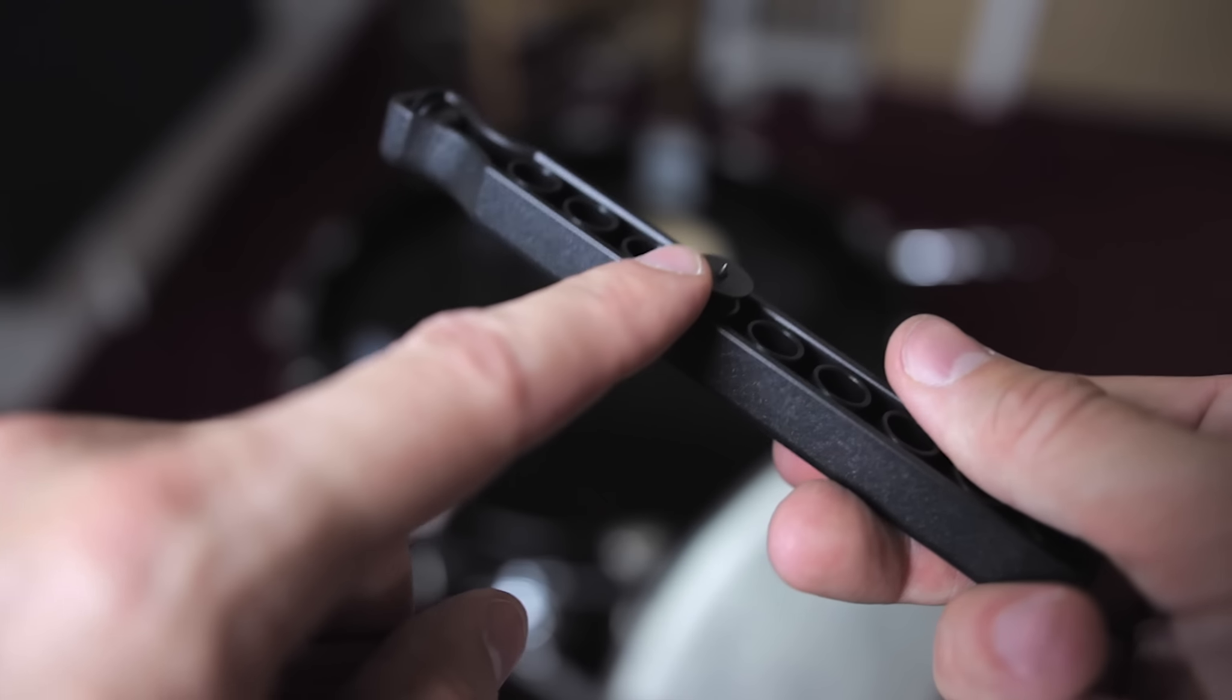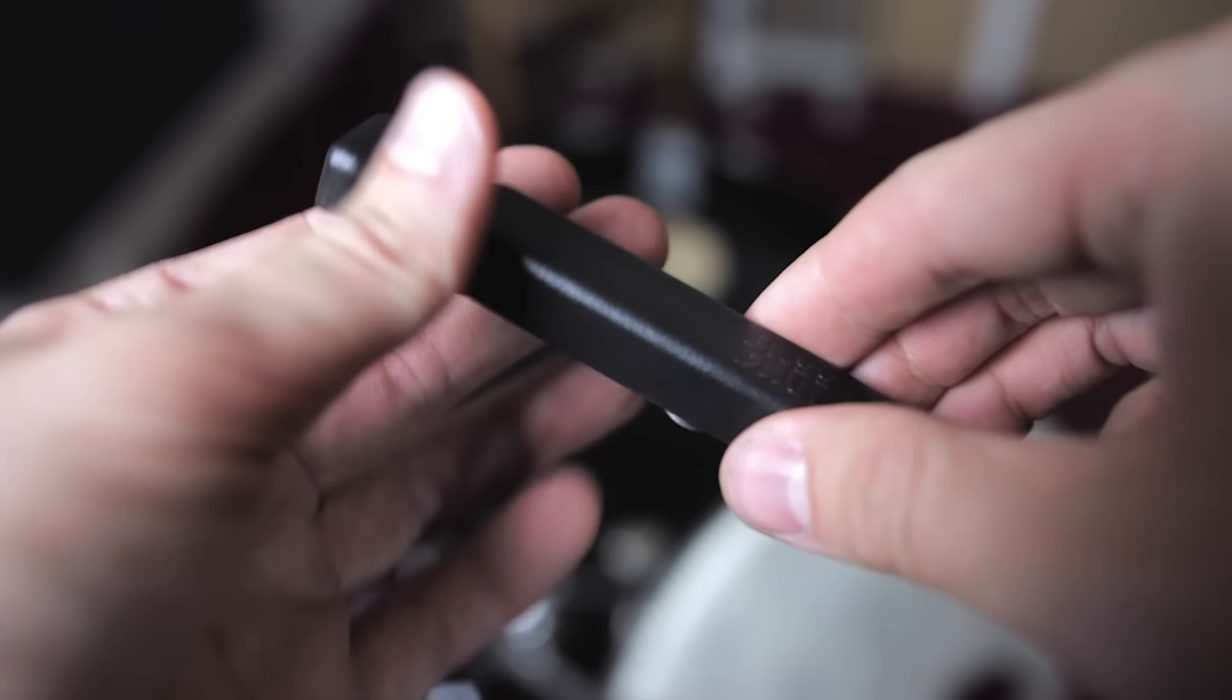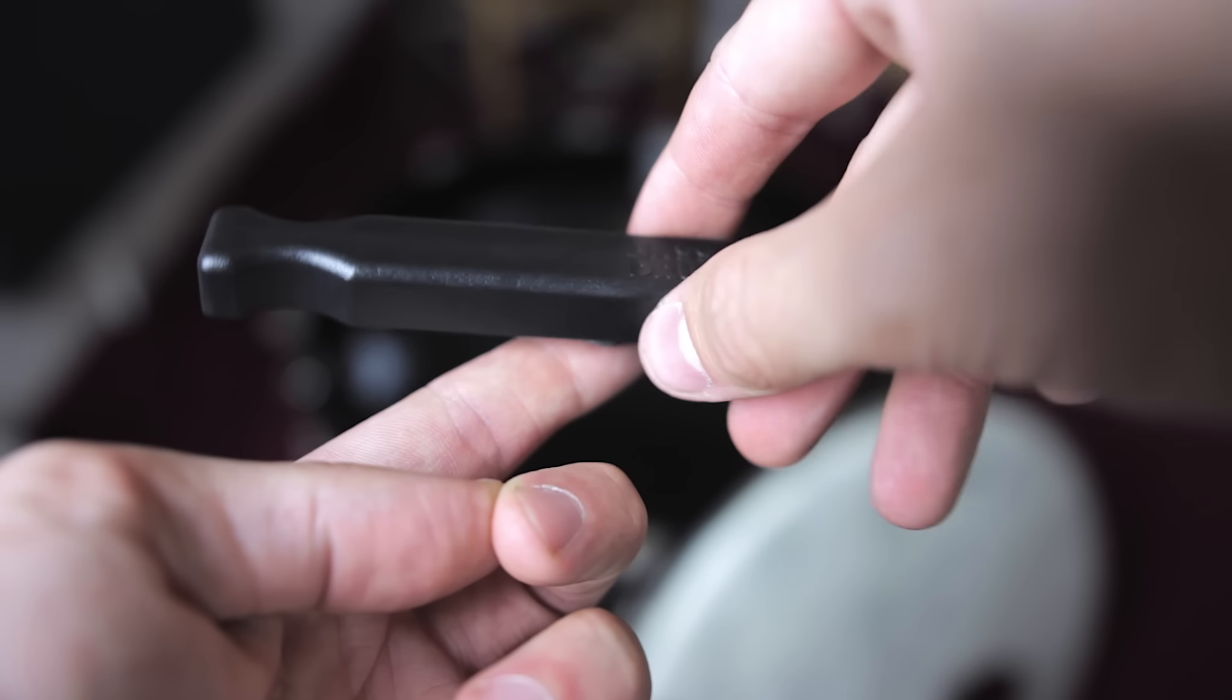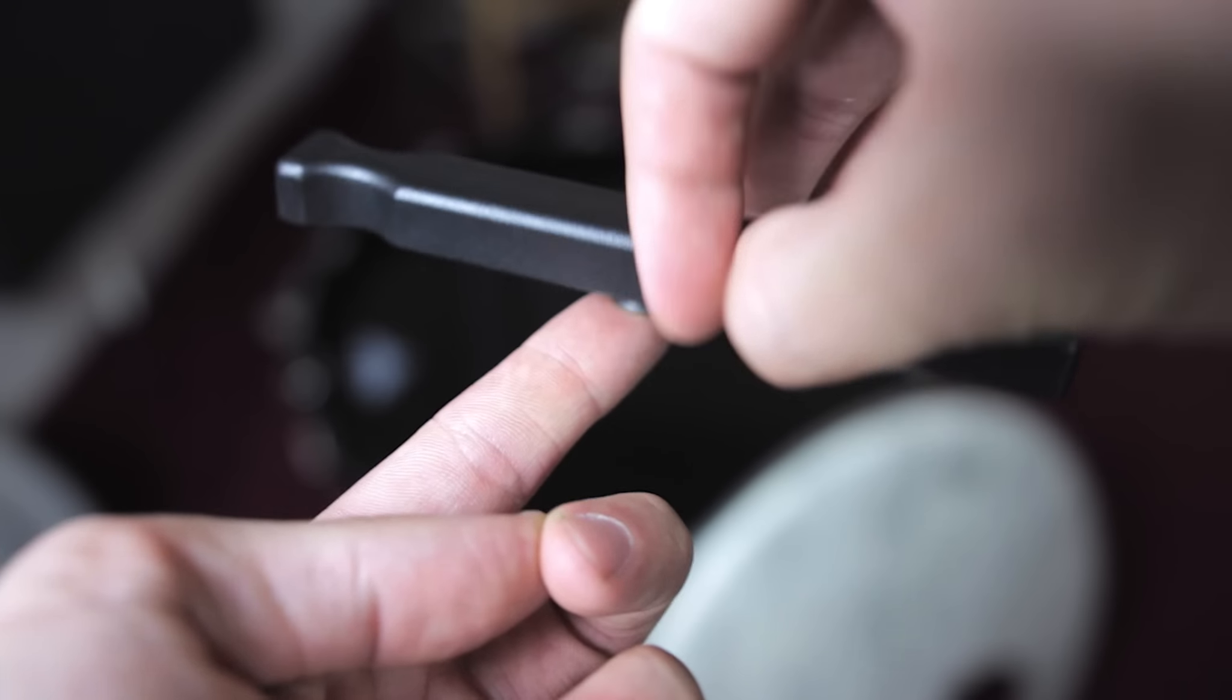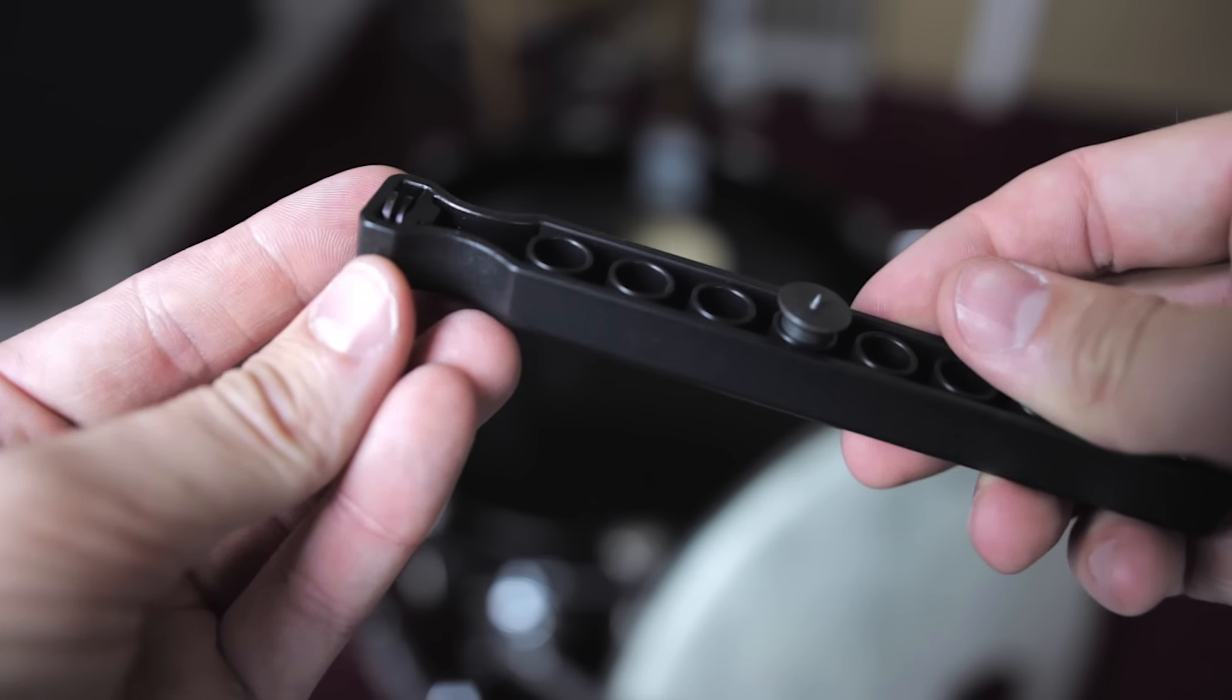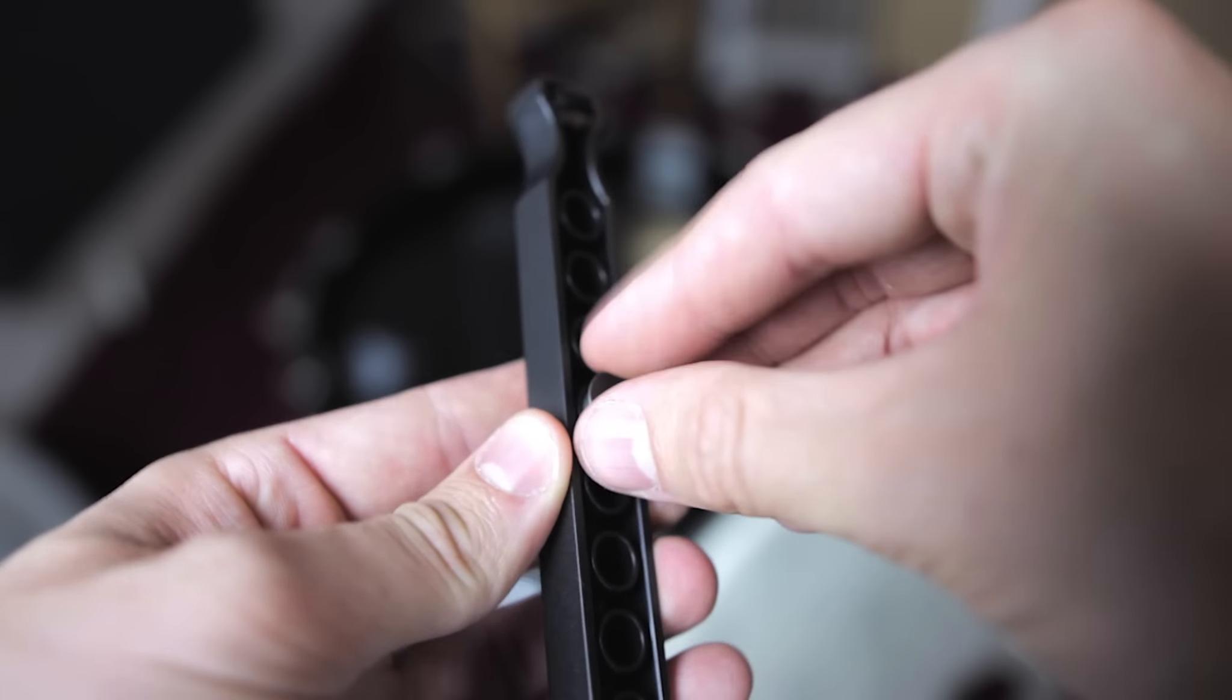You've got this center point here that's really sharp, and that's where you actually puncture the head. That anchors it to be the center of the circle, and then you just rotate this around to cut the hole. It's got a rolling blade here on the end that's pretty sharp.